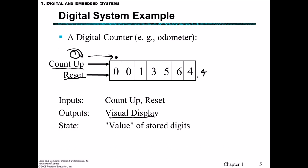In this digital system we have count up and reset as inputs. The outputs are the visual display, with seven segment displays showing each character. A seven segment display for a zero might be something like this. The state is the value of the stored digits. What we're seeing as output depends upon the previous state. We might be driving up and we've gone from four to five to six, depending on the count up pulses from the encoder. If we push the reset button, these should all be zeroed.